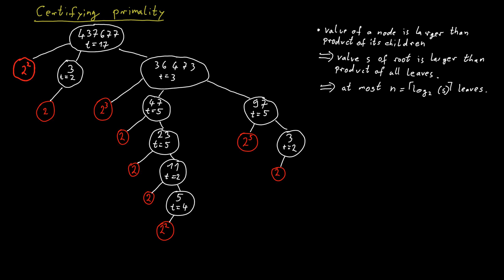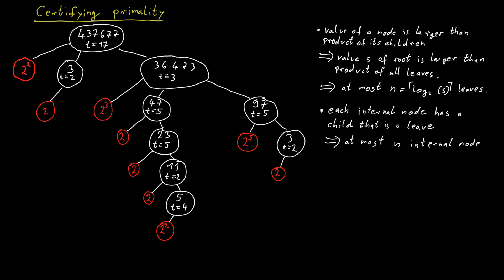But how many internal nodes does the tree have? Each internal node has a leaf as its child, because the value of an internal node is an odd number, and the children are the prime factorization of that number minus 1 — which is even — so 2 is always part of that prime factorization. So each internal node has a power of 2 as one of its children. Since we have at most n = ⌈log s⌉ leaves, we can also have at most n internal nodes, giving at most 2n total nodes in the tree.